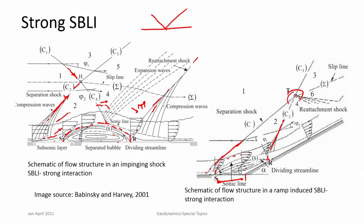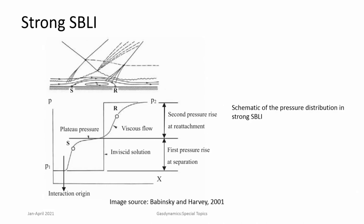In strong shock wave boundary layer interactions there is a significant change in the flow field. Looking at the pressure profile, there is first an increase in pressure due to the separation shock, then a plateau in pressure over the separation zone, then again the pressure increases due to the reattachment shock and finally reaches P2. So in strong shock wave boundary layer interactions you have a pressure profile with a plateau pressure.